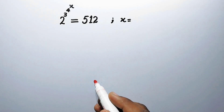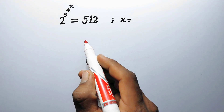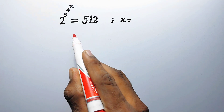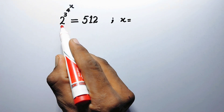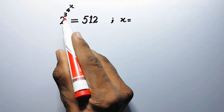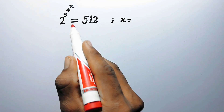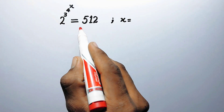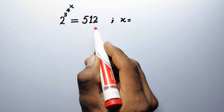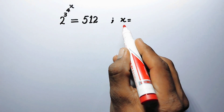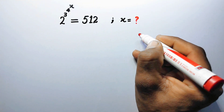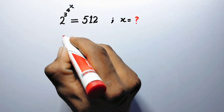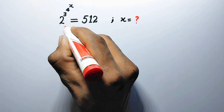Hello everyone and welcome to ExplodeMaths. In this video we are going to solve a very interesting exponential problem: 2 to the power 3 to the power 4 to the power x is equal to 512. We have to find the value of x. So let us see its solution.